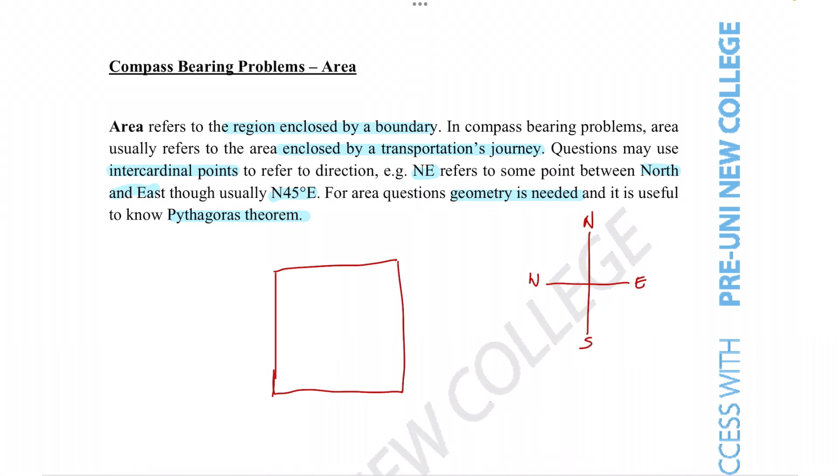A related note would be just the importance of how drawing a diagram can really simplify the question. Even if there are a bunch of different steps involved, if you draw it out step by step, it's much easier to imagine what's going on and figure out the answer without making a mistake. So always draw out your compass with your never eat soggy Weetbix trick and always draw out all the information provided in the question.